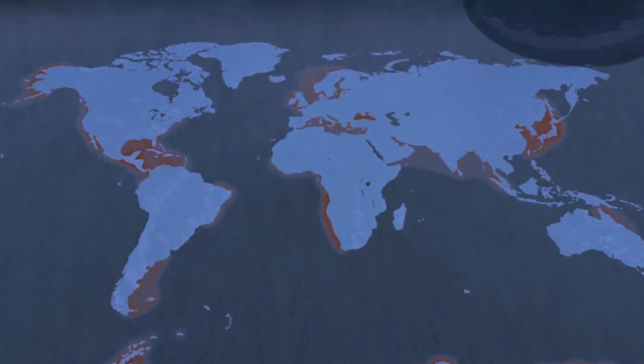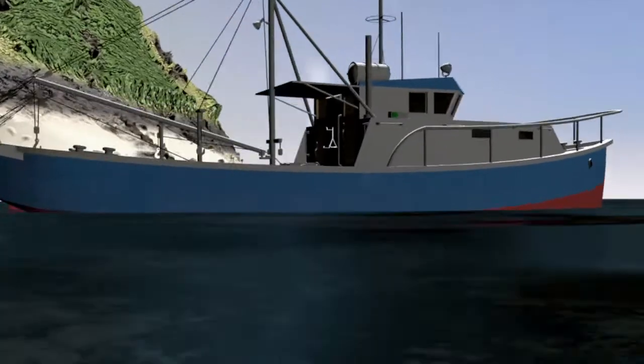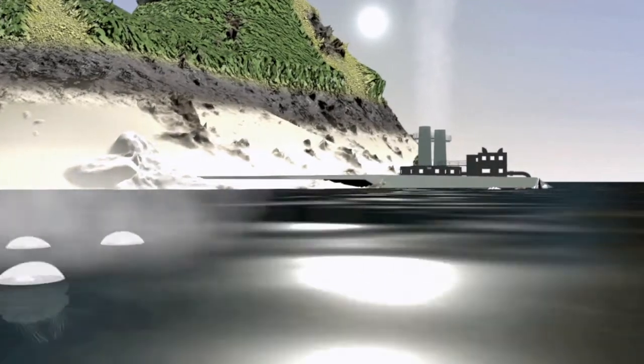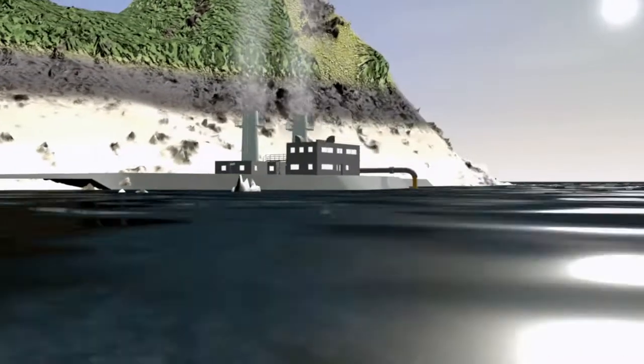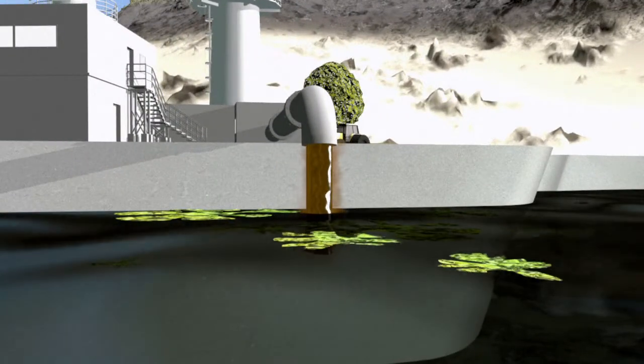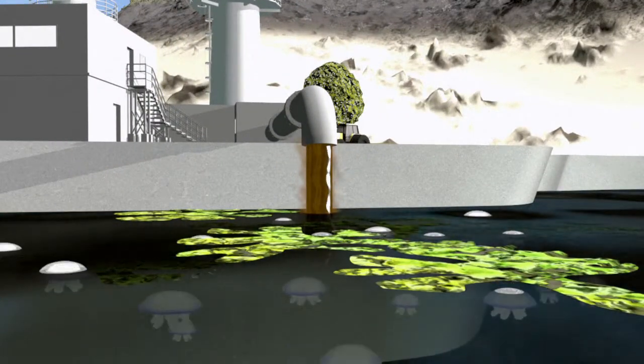Marine biologists cite several causes including overfishing as predators are removed from the oceans, global warming which helps tropical species thrive, and excessive nutrient levels in coastal waters from fertilizer runoff and sewage which can kill fish but create conditions in which jellyfish thrive.